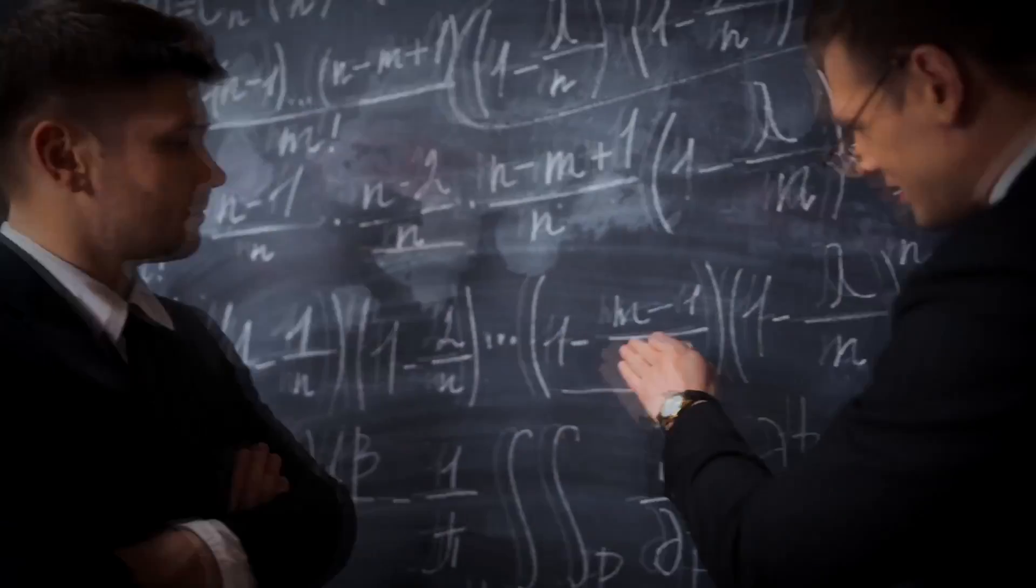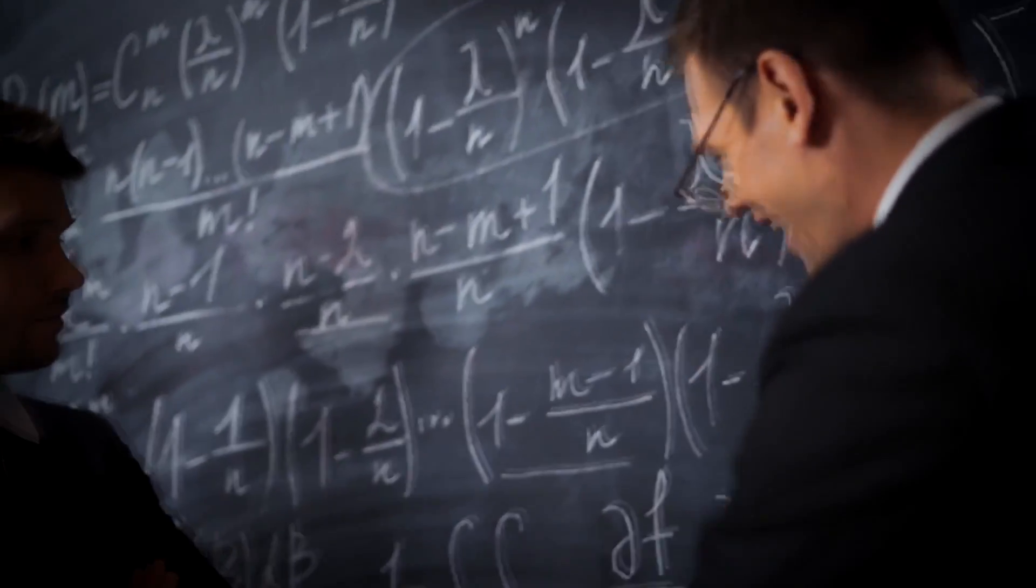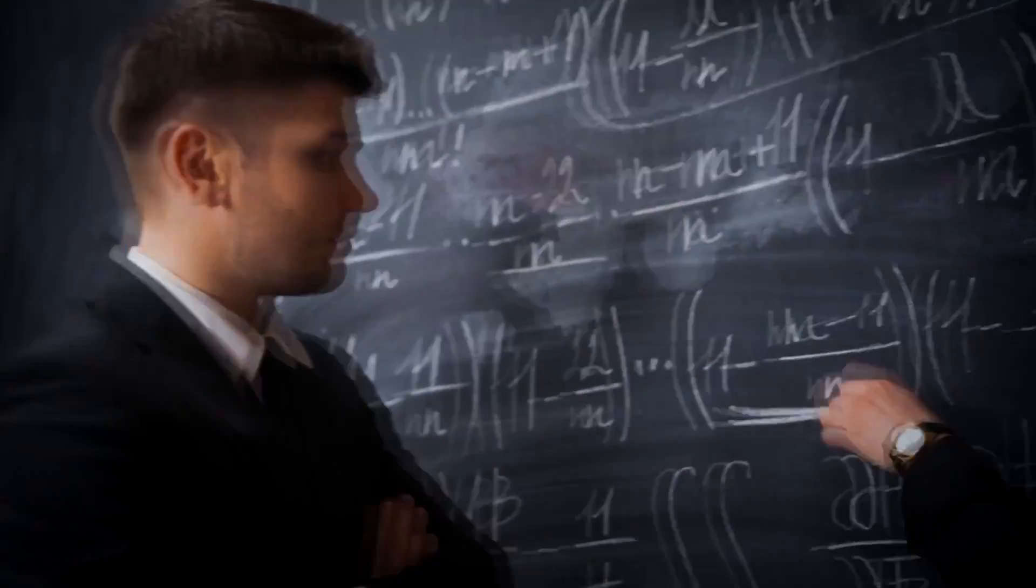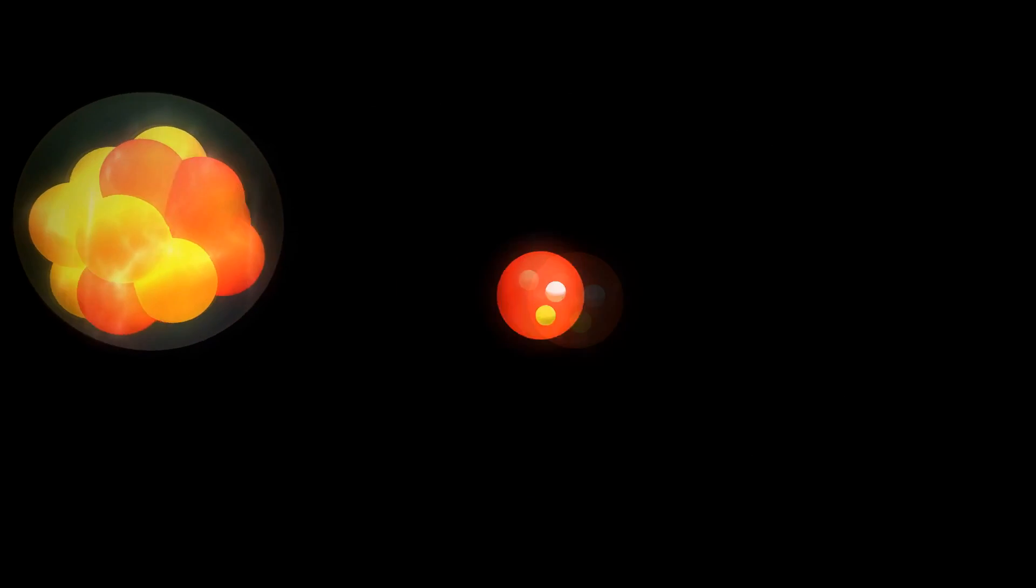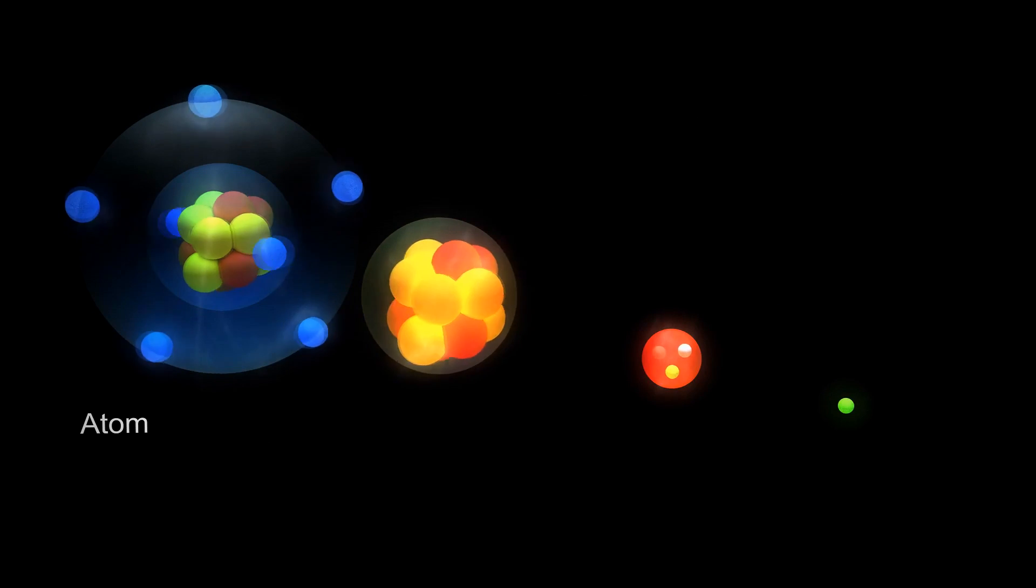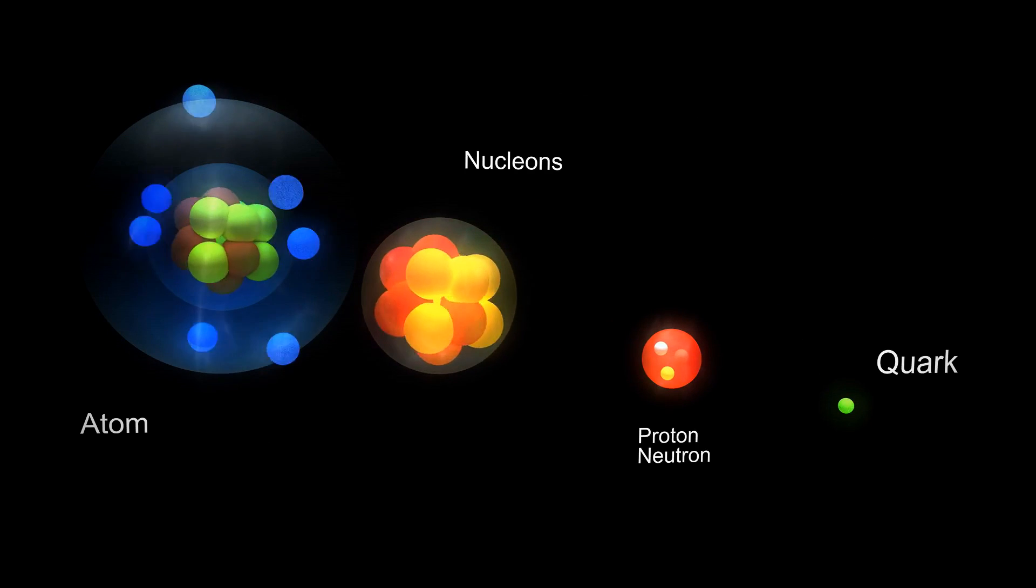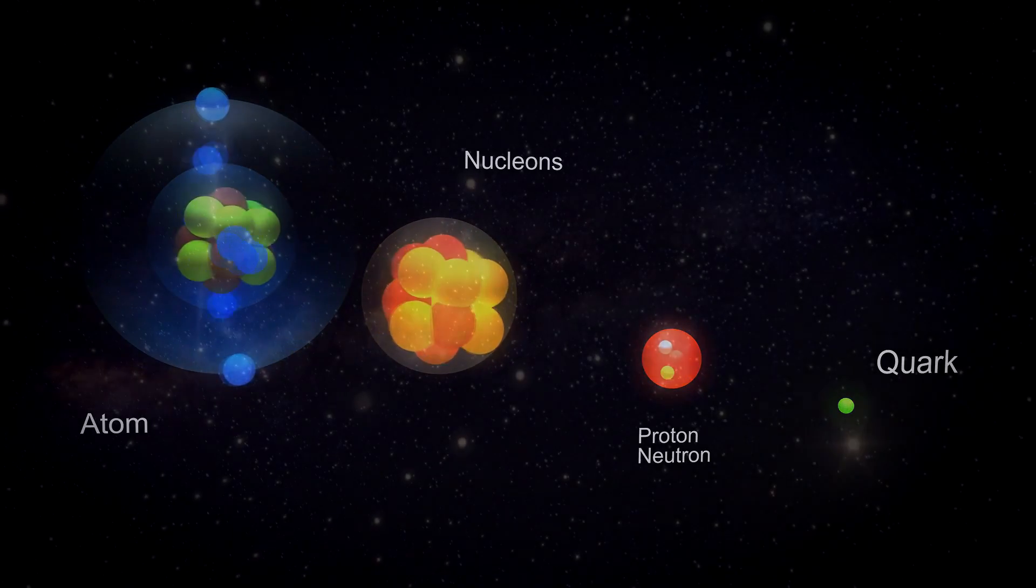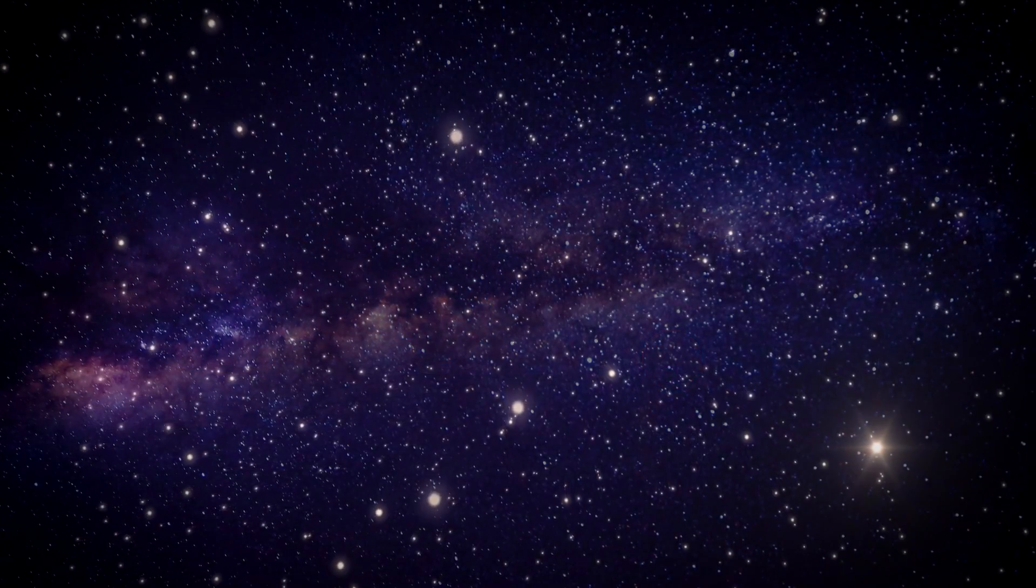So when physicists try to figure out why the universe exists or why it looks the way it does, one of the basic things they have to account for is the building blocks of the universe, the matter that we can see. This might seem trivial, but is it really a given? Not in physics, because matter is not the simplest thing there could have been.